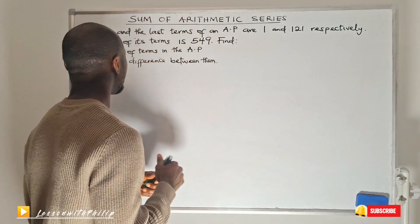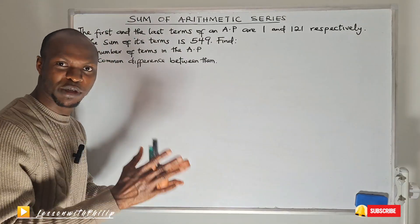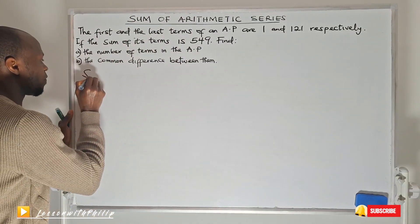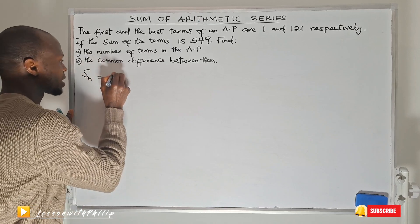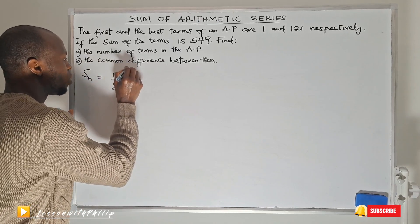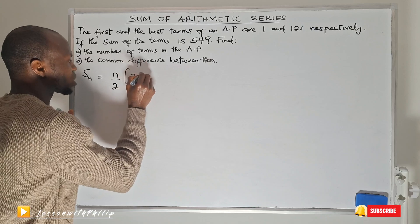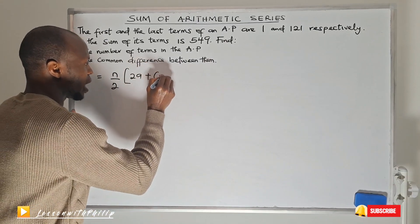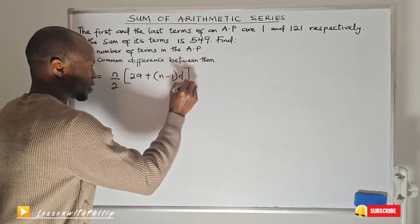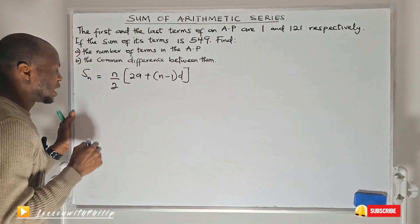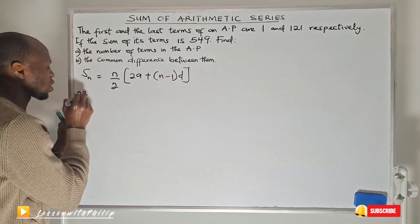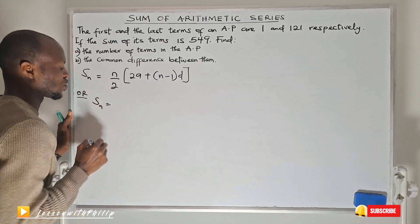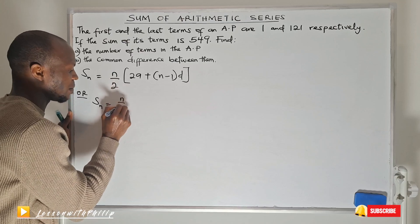To calculate the sum of arithmetic progression we have a formula to use. The sum of arithmetic progression is given as n divided by 2, multiplied by 2 times the first term plus n minus 1 multiplied by the common difference. Sometimes you can also use the formula: sum of AP equals n divided by 2.